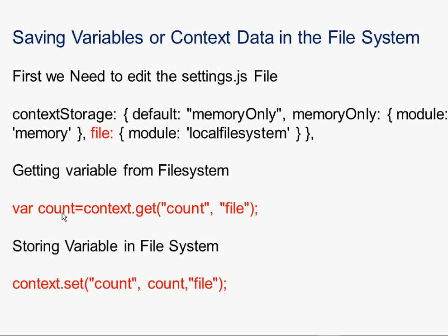This is how you retrieve a variable from the file system. I'm using context here, but I could use flow or global - the same applies when storing multiple variables in one go. So variable count equals context.get count, which is familiar, but notice we need to add the file pointer here: comma file. And for storing the variable in the file system, we use context.set count, count, which again is familiar, and we tell it where to store it: comma file.